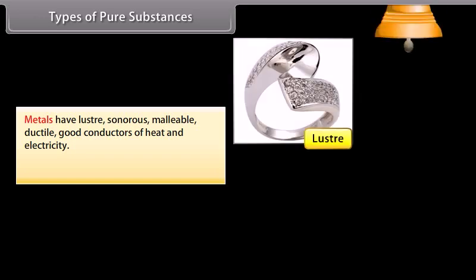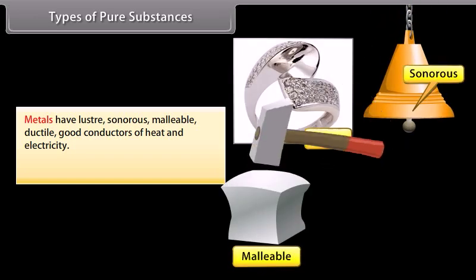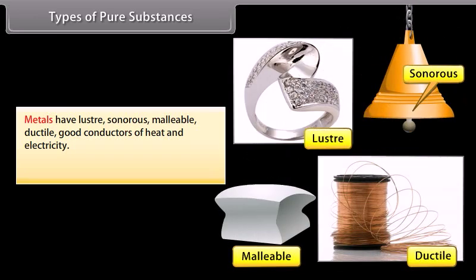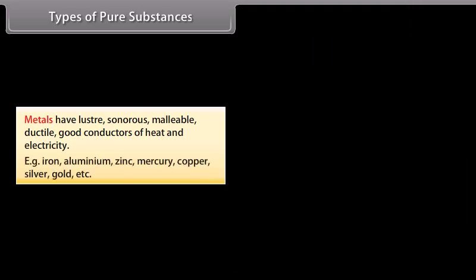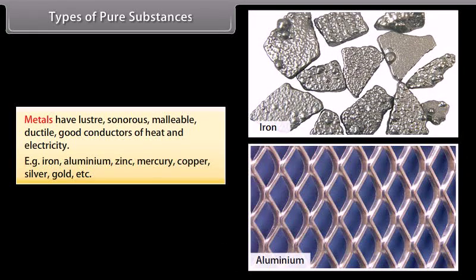Metals have luster, are sonorous, malleable, ductile, and good conductors of heat and electricity. Examples include iron, aluminum, zinc, mercury, copper, silver, gold, etc.